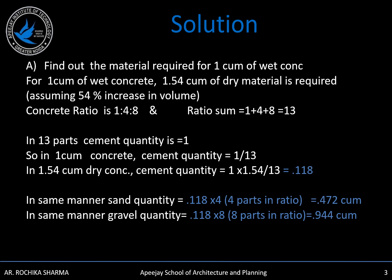In 13 parts of concrete, only one part is for cement. For 1 cubic meter of concrete, cement quantity required will be 1/13. In 1.54 cubic meters of dry concrete, the cement quantity required will be 1.54 divided by 13, which is equal to 0.118 cubic meters. In the same manner, sand quantity is 4 times the quantity of cement, which is 0.472 cubic meters, and the gravel quantity is 8 times the quantity of cement, which is 0.944 cubic meters.